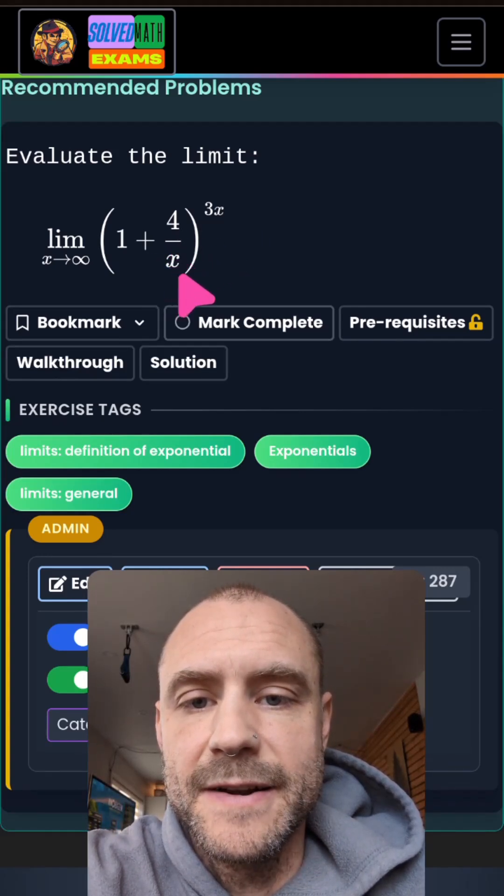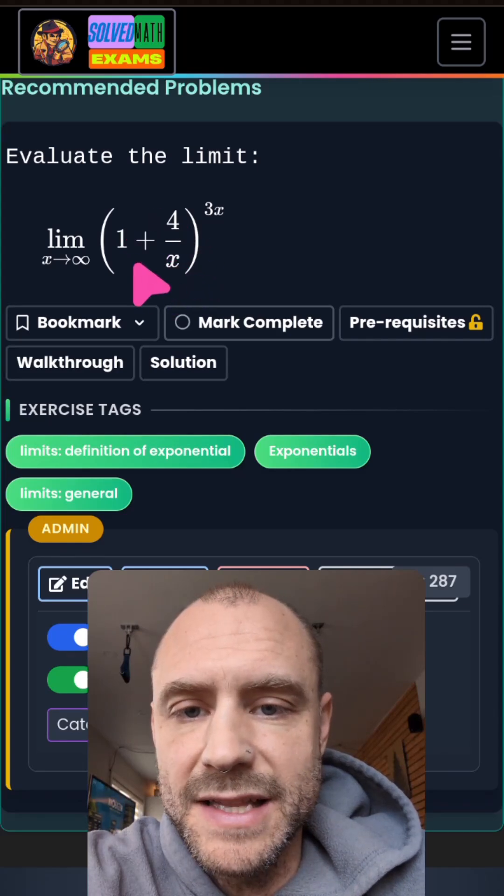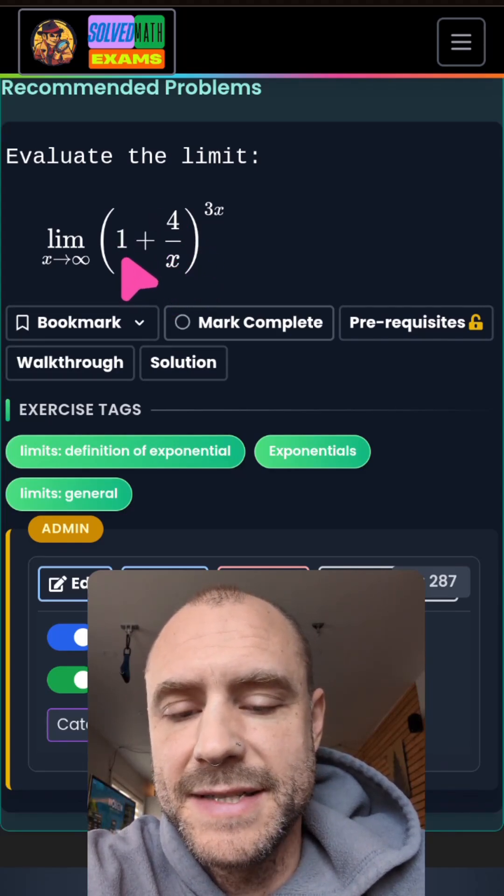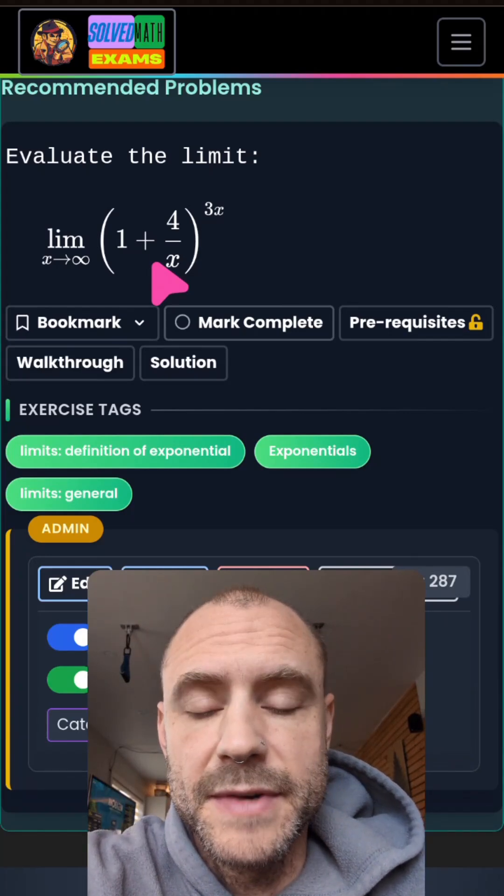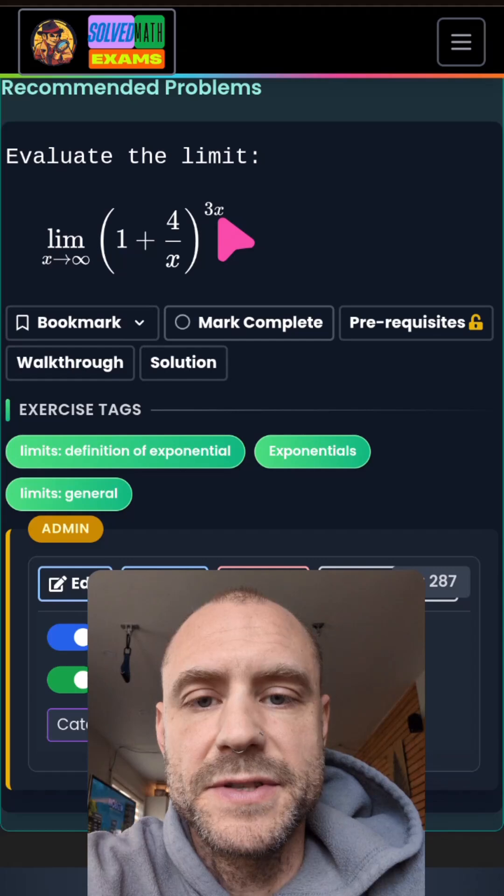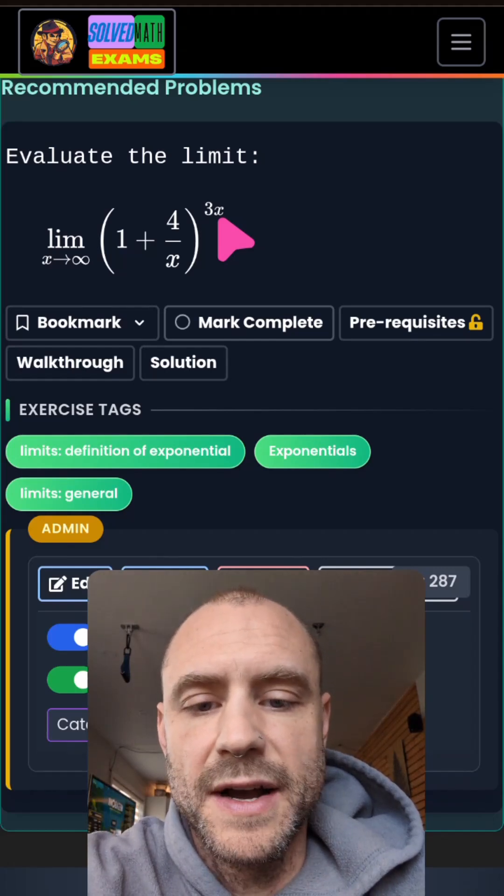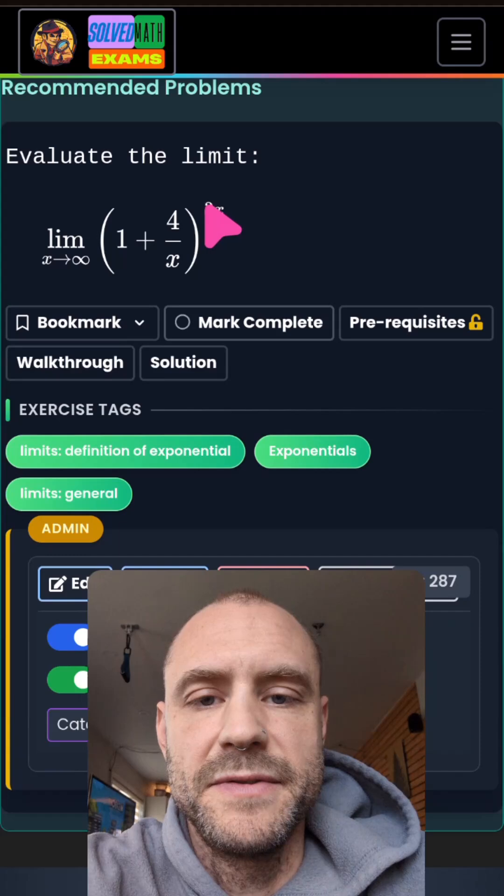Well, as x goes to infinity, this value gets closer and closer to zero. So inside the brackets, it becomes something approaching one plus zero, which is just one. So this is going towards one. And the exponent, as x goes to infinity, is obviously exploding off towards infinity. So this thing's going towards one and this thing's going to infinity.